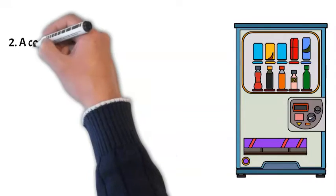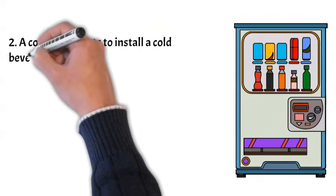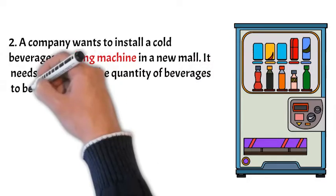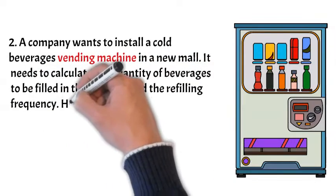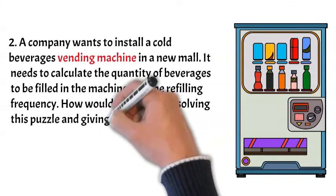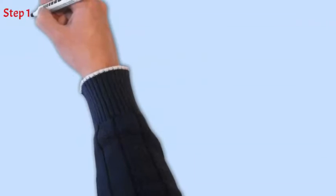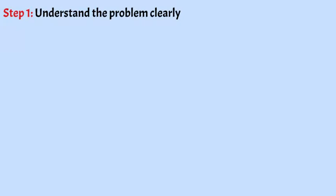Question number two. A company wants to install a cold beverages vending machine in a new mall. It needs to calculate the quantity of beverages to be filled in the machine and the refilling frequency. How would you go about solving this puzzle and give the output data to your client? Another interesting problem. Let's break it down so that we can solve it. And for that, your step number one is understand the problem clearly. Here, we have to find out the quantity of beverages to be filled in the vending machine initially and how often should it be refilled.